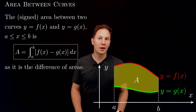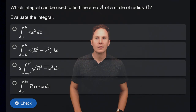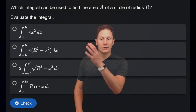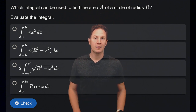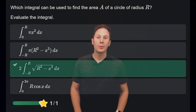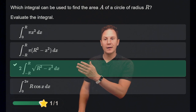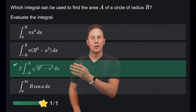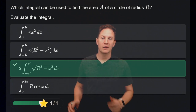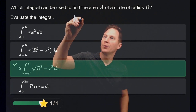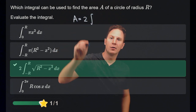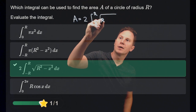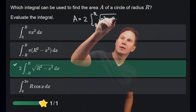Now let's compute some areas between curves. Which integral can be used to find the area of a circle of radius r? Pause the video, select your answer, and also evaluate the integral. The answer is twice the area under the upper semicircle of radius r centered at the origin, computed as two times the integral from negative r to r of the square root of r squared minus x squared dx.